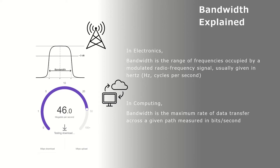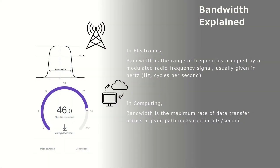Bandwidth in computing is measured in bits per second — it could be megabits per second or gigabits per second, depending on the context. The kilo and giga prefixes, as we know, are simply multiples of ten.